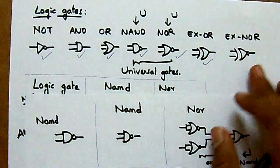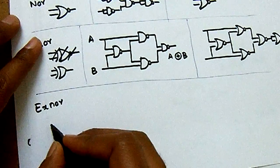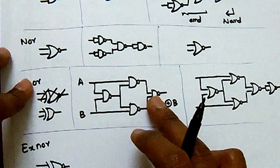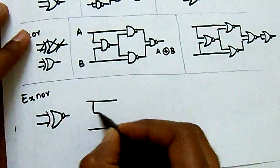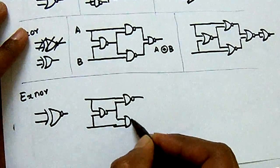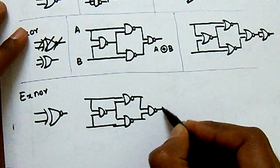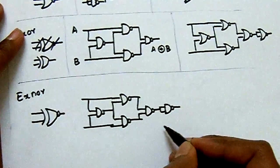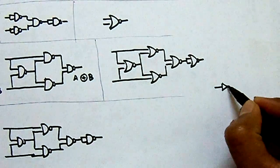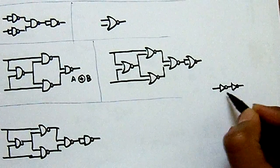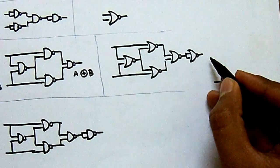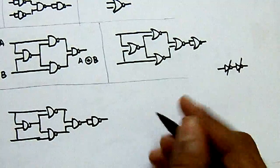XOR is done. Now for XNOR: the butterfly structure appended by an inverter gives XNOR. Note that the NOR-based XOR already ends with an inverter — appending another inverter means the two inverters cancel each other. So XNOR in terms of NOR gates is just the same butterfly structure without the final inverter.